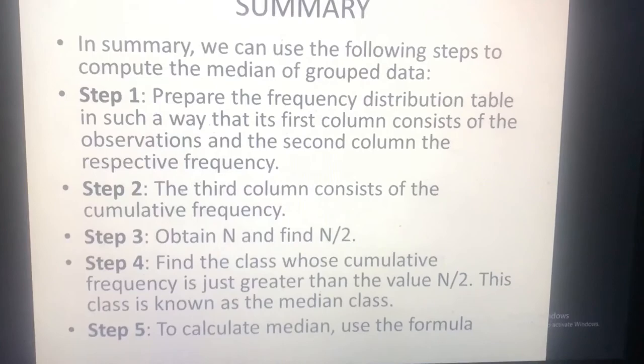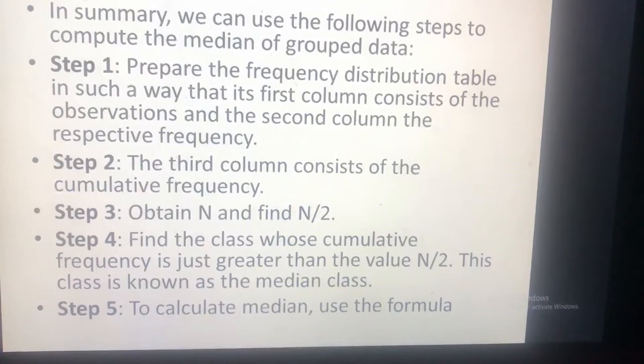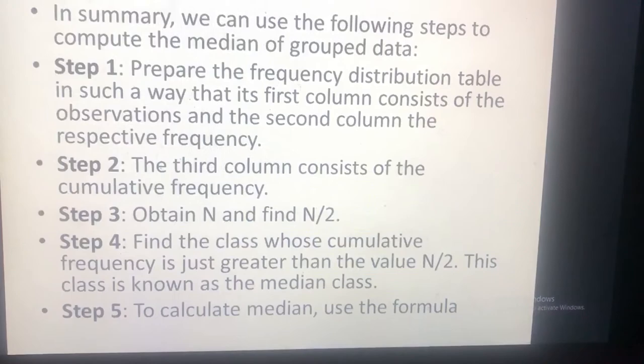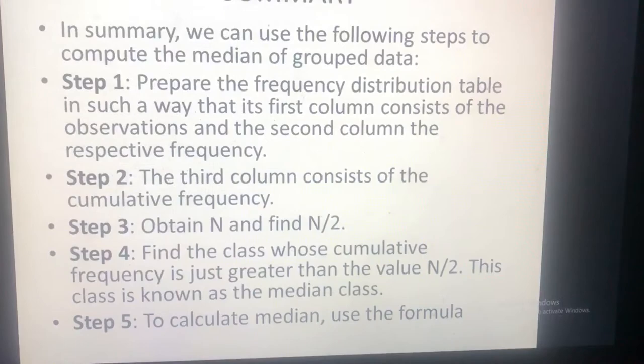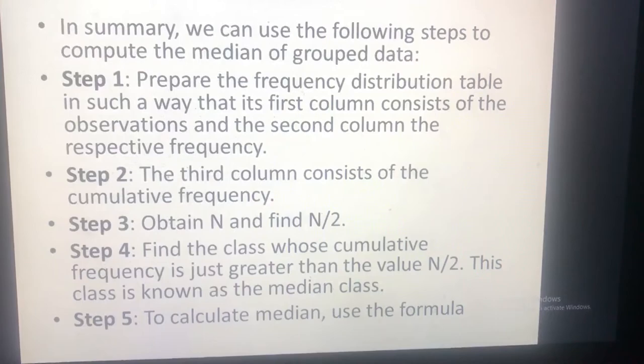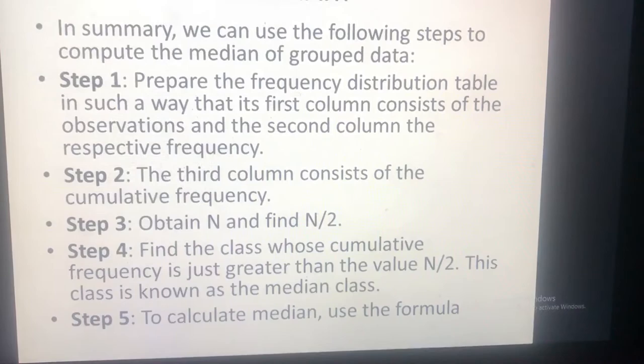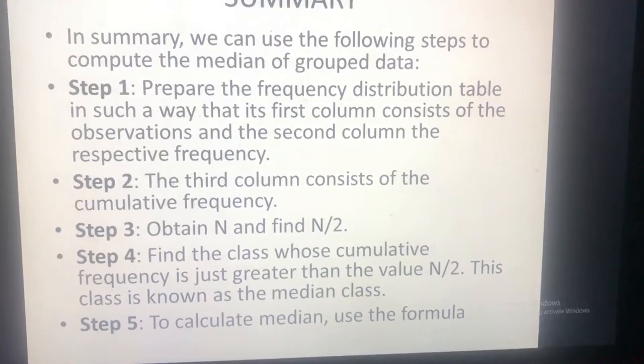In summary, to compute the median of grouped data: Step 1 — prepare the frequency distribution table with observations and frequencies. Step 2 — compute the cumulative frequencies. Step 3 — obtain n and find n over 2. Step 4 — find the class whose cumulative frequency is just greater than n/2; this is the median class. Then apply the median formula.